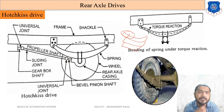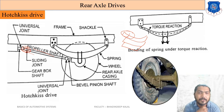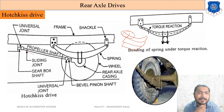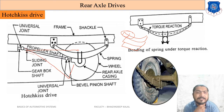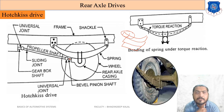At both ends of the propeller shaft, universal joints are used. A sliding joint is also provided on the propeller shaft so that when the wheel moves up and down over a speed breaker, the propeller shaft can slide and compensate for the change in distance — preventing it from breaking. This sliding joint compensates the change in length as the shaft angle changes. This completes the Hotchkiss drive construction.